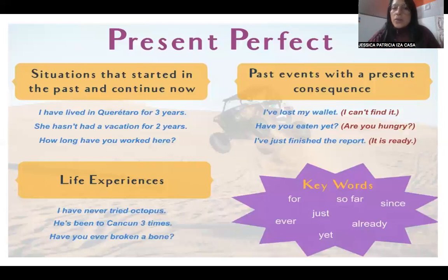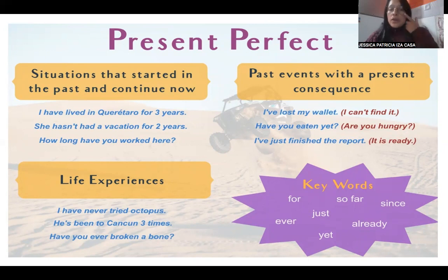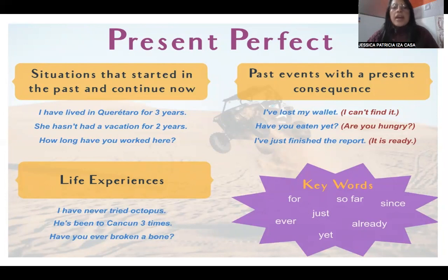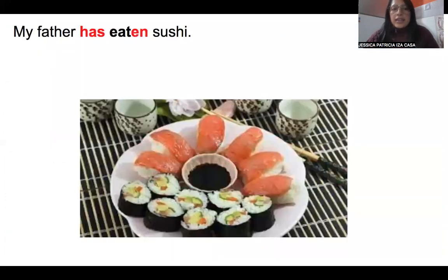We are going to analyze when to use present perfect. We use the present perfect when you want to talk about situations that started in the past and continue now, about past events with a present consequence, and about life experiences.